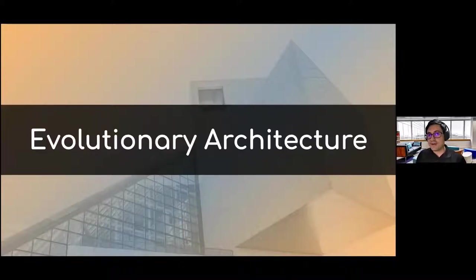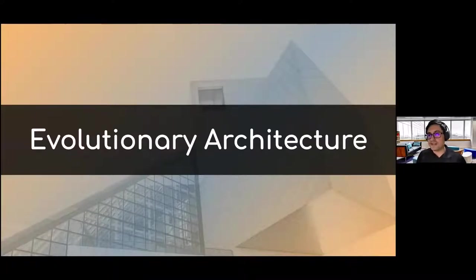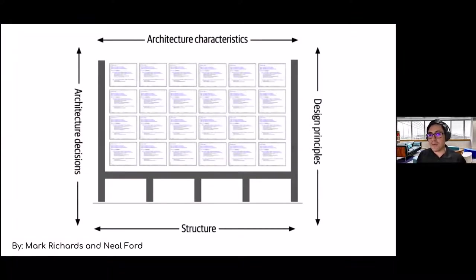Let's talk about evolutionary architecture. The industry has made a great effort to precisely define software architecture. Some architects refer to it as the blueprint for a system, while others define it as a roadmap for system development. Based on the definition by Mark Richards and Neal Ford in their book Fundamentals of Software Architecture, software architecture consists of the structure of the system combined with architectural characteristics, architecture decisions, and design principles.